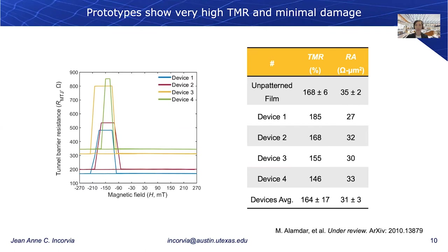Our prototypes are able to overcome some of the major challenges we were facing with these domain wall magnetic tunnel junction devices, allowing them to enter the realm of building circuits. The first major challenge is that patterning can degrade both the tunnel magnetoresistance and the resistance area product of the unpatterned film. We've shown that after patterning, all four devices have average tunnel magnetoresistance of 164%, very close to the unpatterned film TMR, and resistance area product of 31 ohm·μm², also very close to the unpatterned RA.